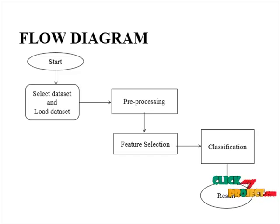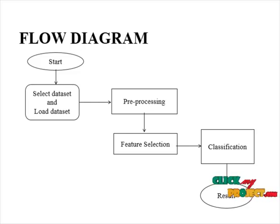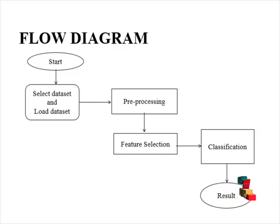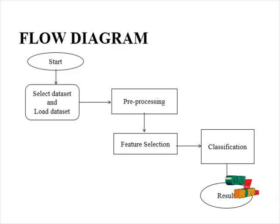In feature selection, it is like a model selection. We need to select the independent variable and dependent variable. After selecting the independent and dependent variables, we need to split the dataset into training dataset and testing dataset for both independent and dependent variables. After splitting, we implement the classification using machine learning techniques to classify the data and predict results based on accuracy, precision, recall, and F1 score.